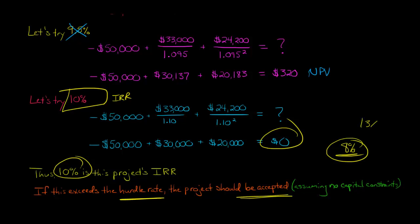If the hurdle rate was 13%, then we would say, well, we get a 10% return here, but we don't meet the hurdle rate. We would reject the project. And again, if we do exceed the hurdle rate, we want to make sure that we don't have any kind of capital constraints. And I'll make another video where we talk about what to do. You might have an IRR that exceeds the hurdle rate, but you have some kind of capital constraints where the company only has so much money to invest in certain projects. And we'll talk about that in another video.